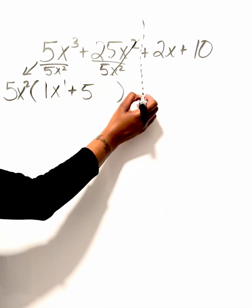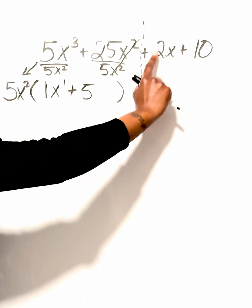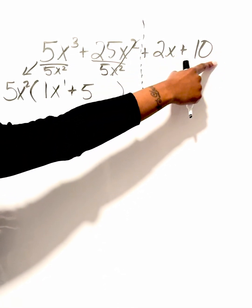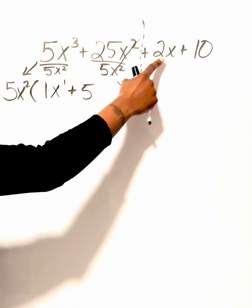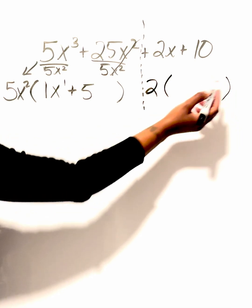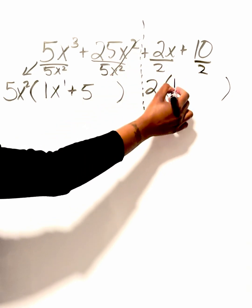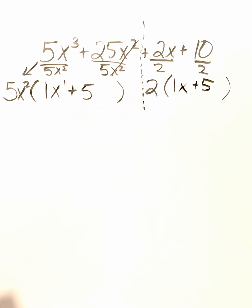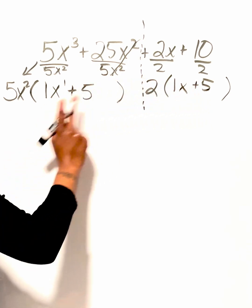Now we repeat the same process on the right side. We have a number and a number, so I can factor out a number. But since only one term has a variable — this 10 doesn't have an x — I can't factor out a variable, only a value. The GCF between 2 and 10 is 2, so I'm going to divide everything by 2. 2 divided by 2 gives me 1, bring down the x, and 10 divided by 2 gives me 5.